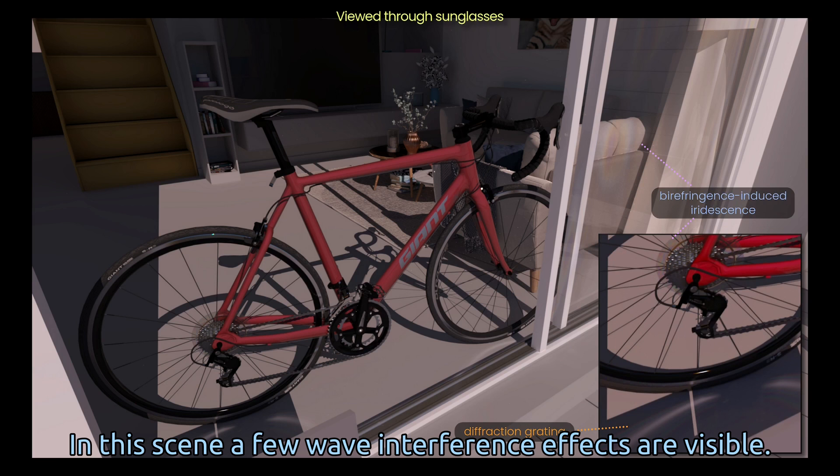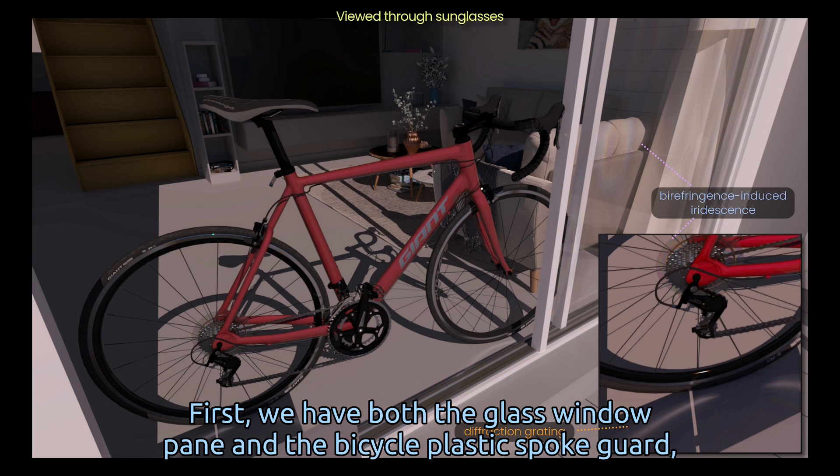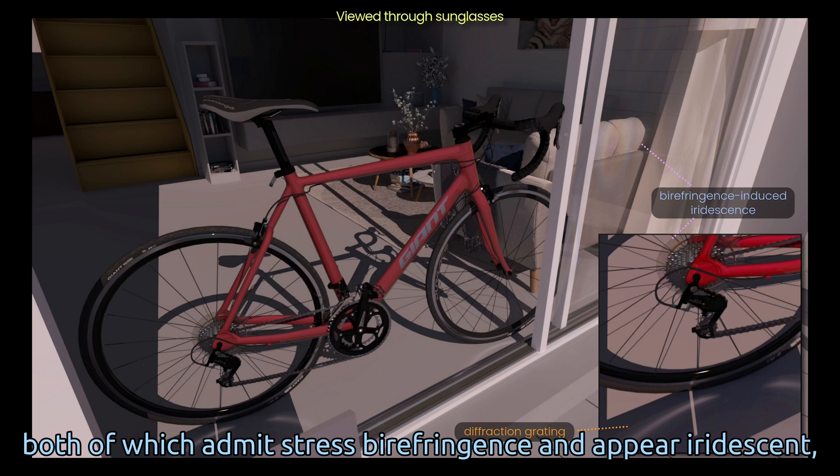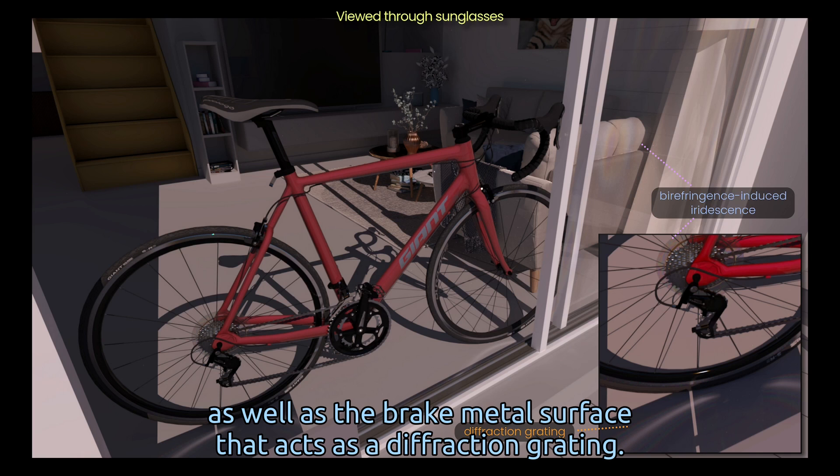In the scene, a few wave interference effects are visible. First, we have both the glass window pane and the bicycle plastic spoke guard, both of which admit stress birefringence and appear iridescent, as well as the brake metal surface that acts as a diffraction grating.